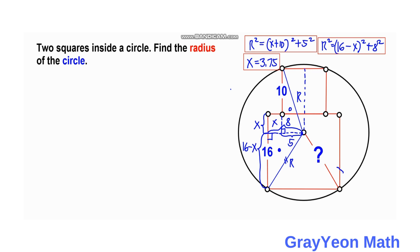Now for the final step, we can choose any of the two equations to find the value of r. Let's choose the first one. So r equals the square root of (x + 10)² + 5², or 25. So r equals the square root of 3.75 plus 10 squared plus 25.